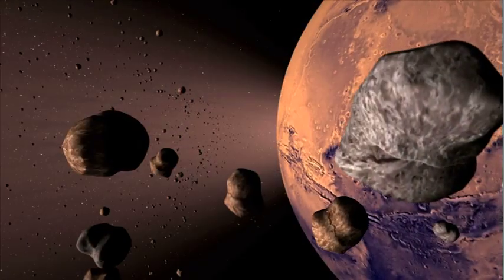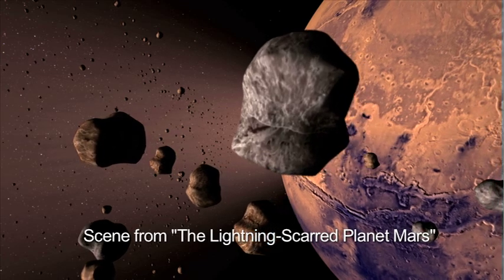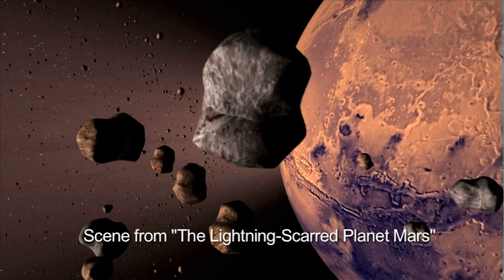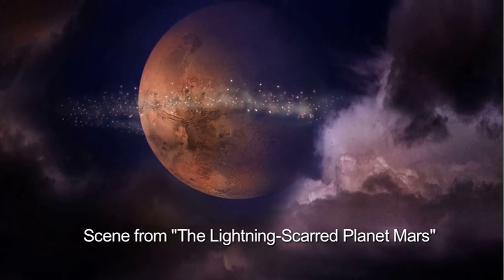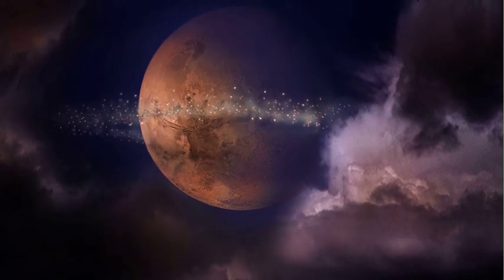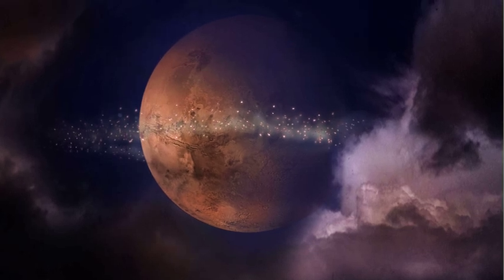In the electrical interpretation, not just comets, but asteroids and meteors as well were born in planetary upheaval, as electric arcs blasted material from the surfaces of planets and moons, to produce fused formations identical in appearance to fused material in laboratory experiments with electric discharge.